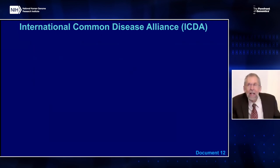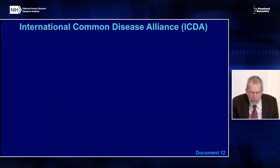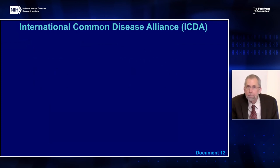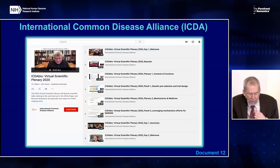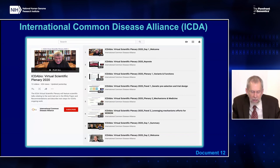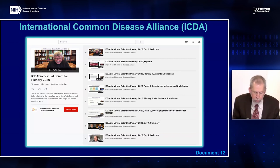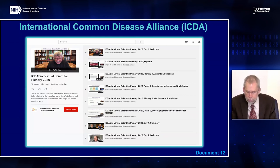The International Common Disease Alliance, or ICDA, was launched in 2019 with the goal to improve prevention, diagnosis, and treatment of common diseases by accelerating discovery from genetics maps to biological mechanisms to physiology and medicine. In December, the ICDA held a two-day virtual scientific plenary meeting featuring scientific talks and panel discussions, serving to highlight the ICDA white paper and recommendations and to describe next steps for the organization. Over 700 people attended the virtual meeting, and all presentations are available on the ICDA YouTube channel.